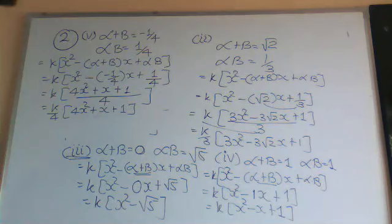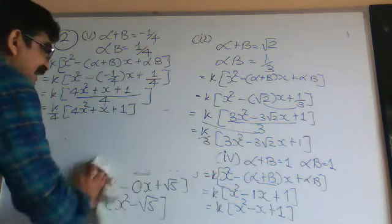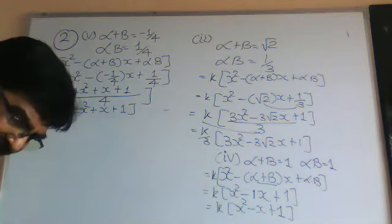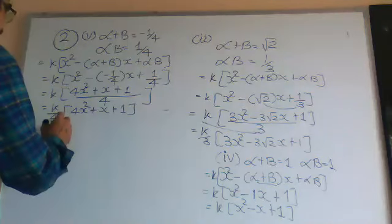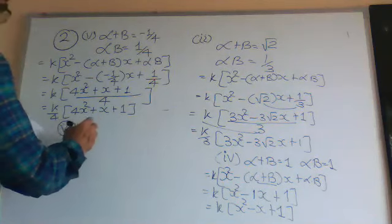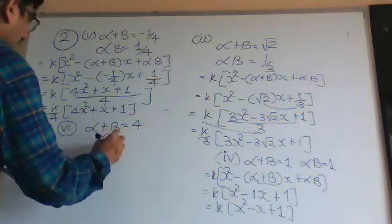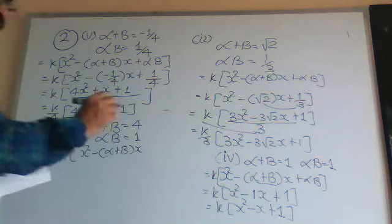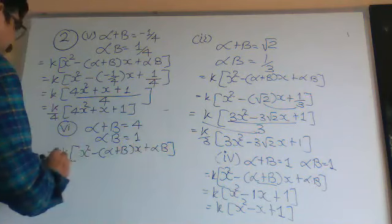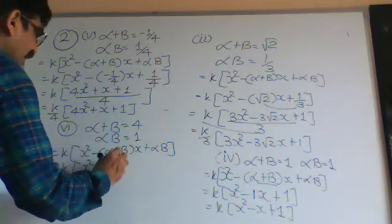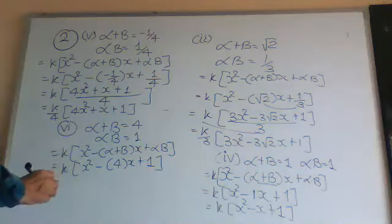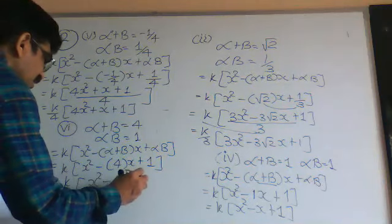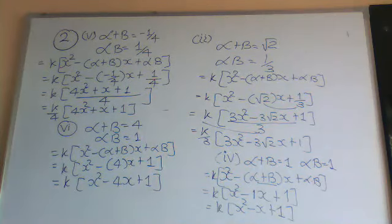The last question is Number 6 of Exercise 2.2. The sum of roots α + β is 4 and the product α·β is 1. Using the formula k into [x² minus (α+β)x plus αβ], we get x² minus 4x plus 1. That is your answer. So these are all the sub-parts of Exercise 2.2, Question Number 2. Thank you.